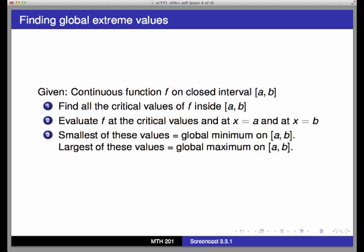Then, look through the list you just created in step two. The smallest of the values from step two is the global minimum value of f on the closed interval from a to b, and the largest of those is the global maximum value on f on the interval from a to b. In the upcoming videos, we'll see examples of this workflow put to use in depth.